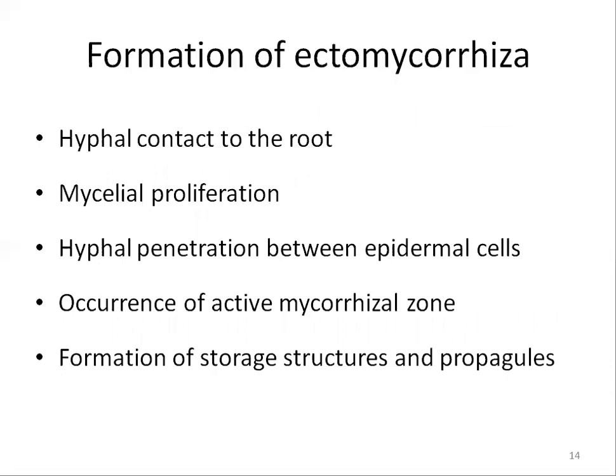Now let's see how the ectomycorrhizal association forms. Ectomycorrhizals form where host roots and compatible fungi are growing in close proximity and environmental conditions are favorable. The sequence of events begins with hyphae contacting, recognizing, and adhering to the root epidermal cells near the apex of young, actively growing higher-order lateral roots — the fine roots of the host plant. The mycelia then proliferate on the root structure and differentiate to form the mantle layer.